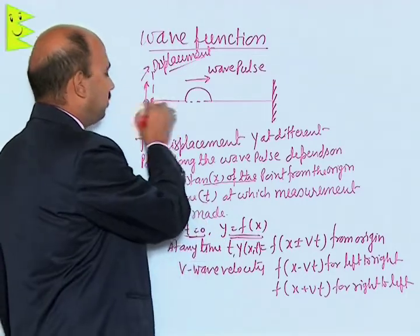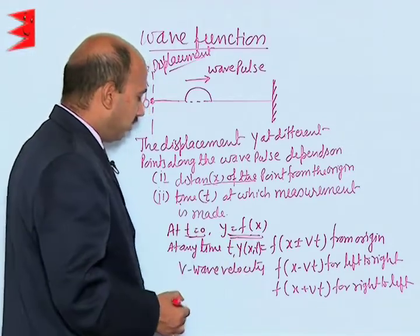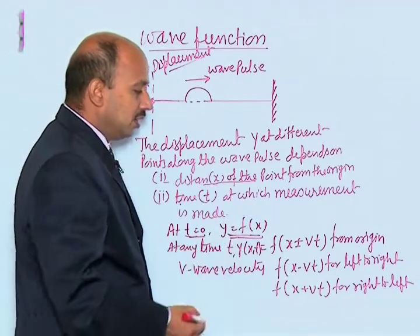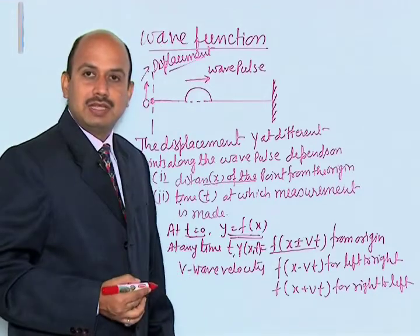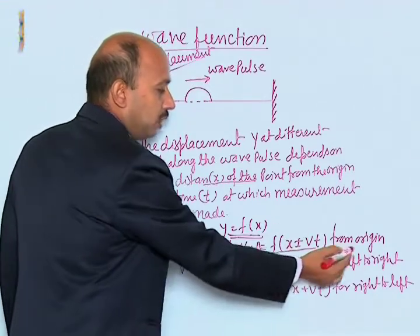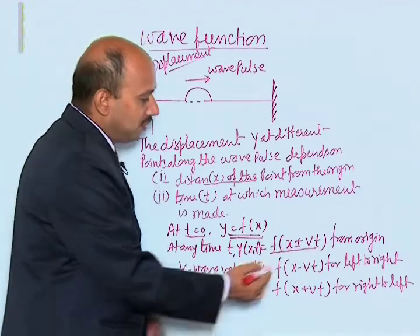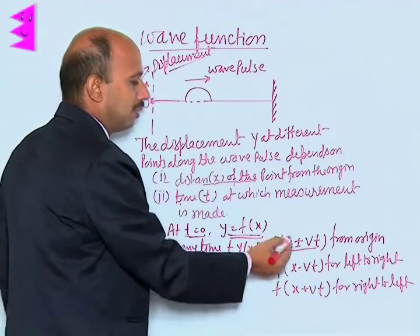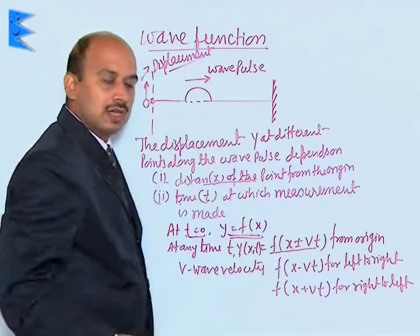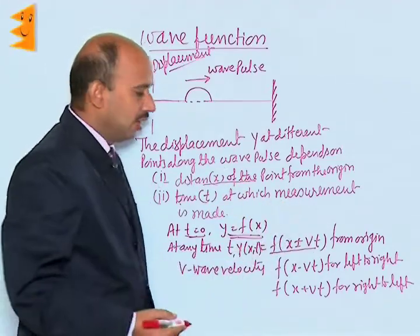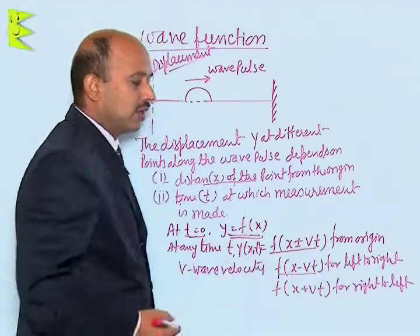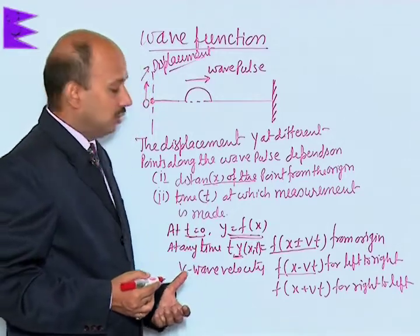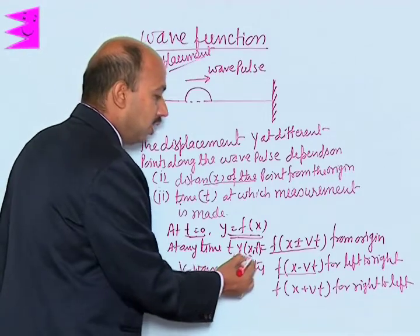At t = 0, when the particle is at the origin, we write y = f(x). At any time t, the displacement y at distance x is represented as y(x, t) = f(x ± vt), where v is the velocity of the wave pulse. If the wave travels from left to right we write x − vt, and if it travels from right to left we write x + vt. This equation, describing displacement as a function of both x and t, is known as the wave function.